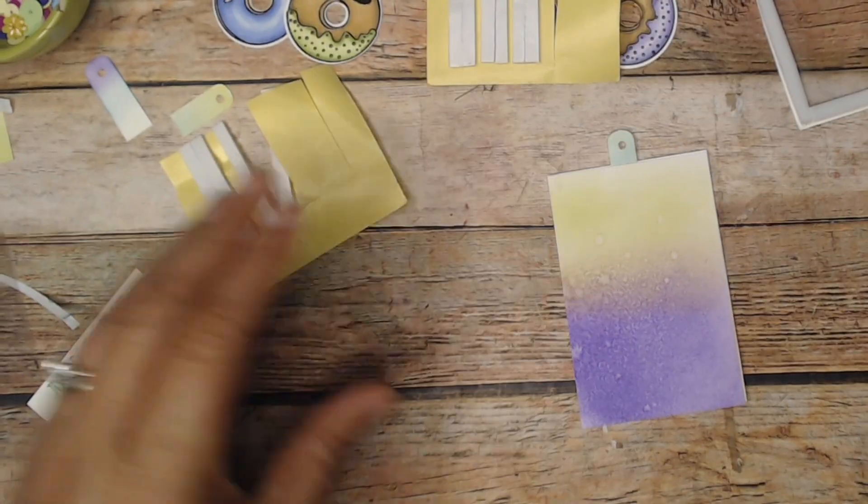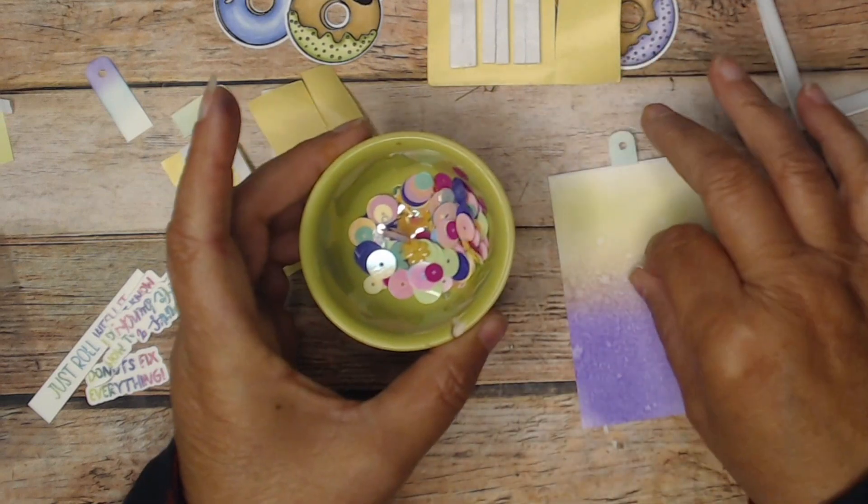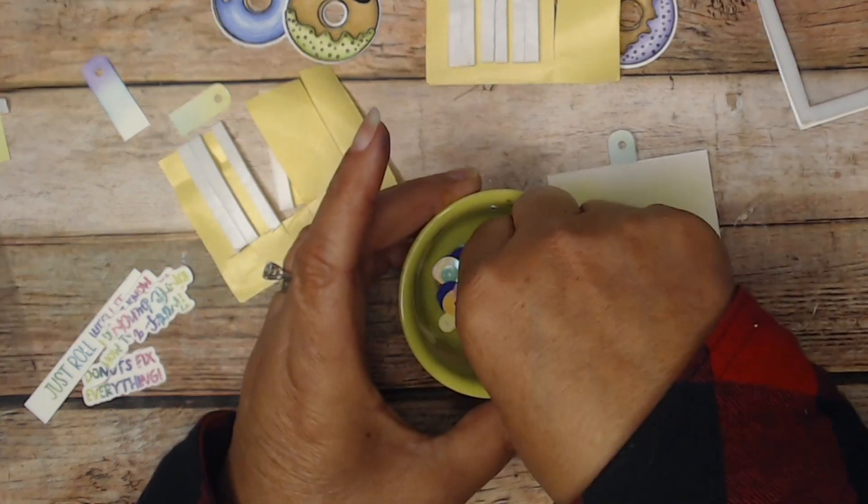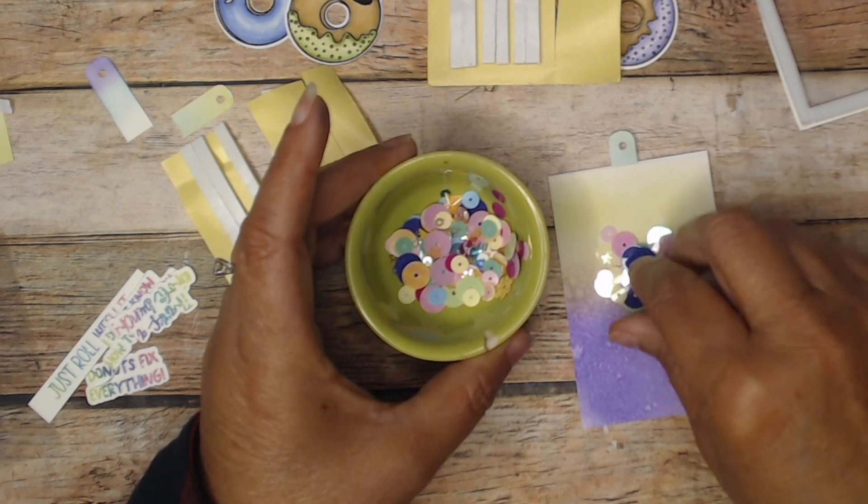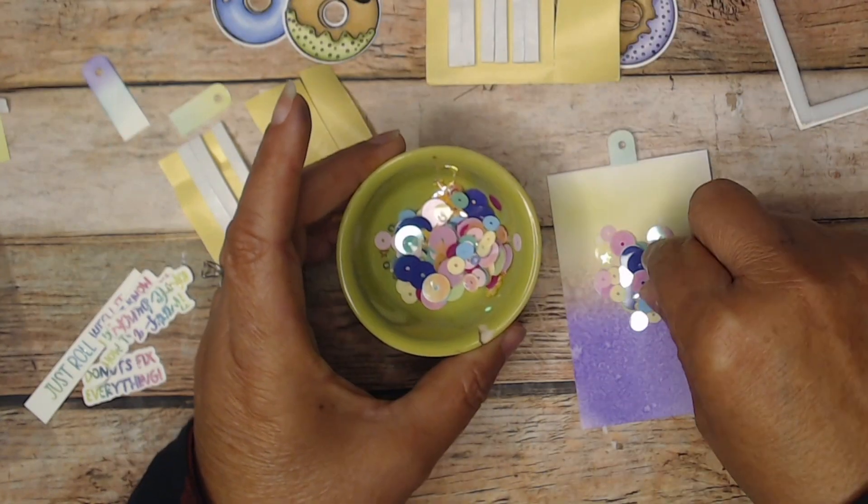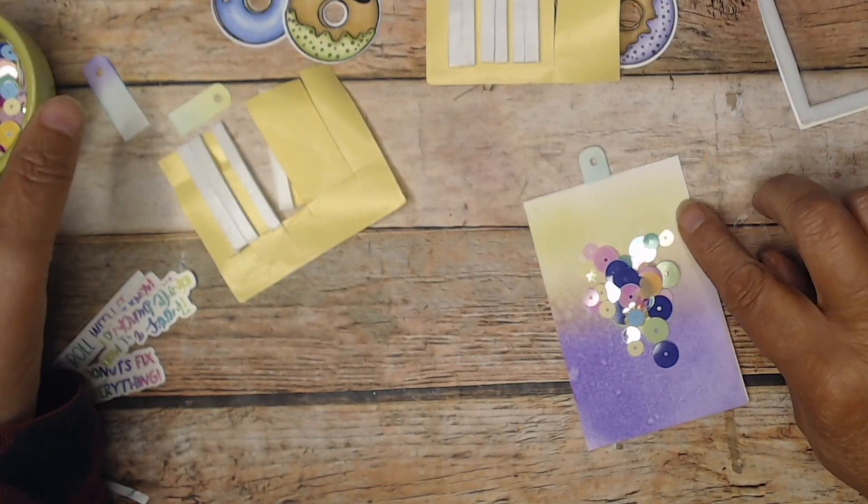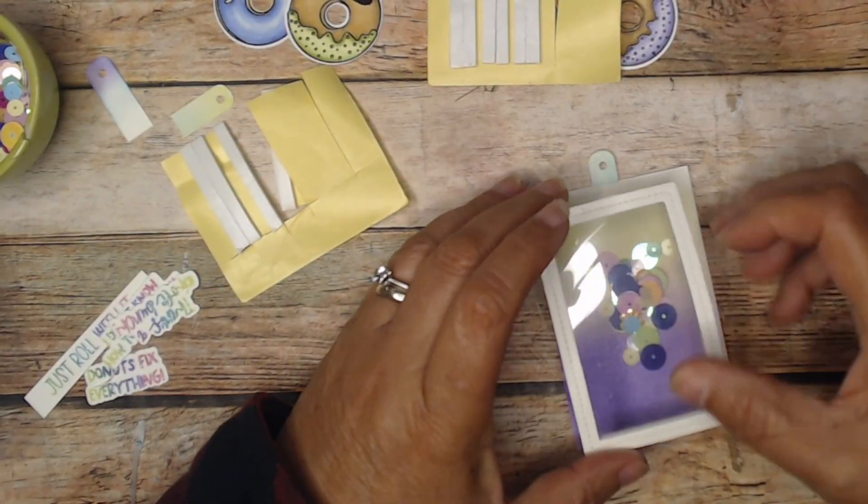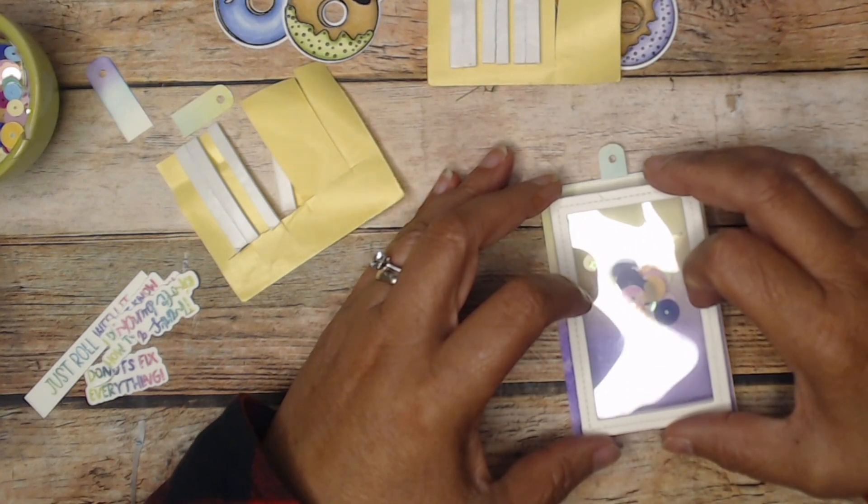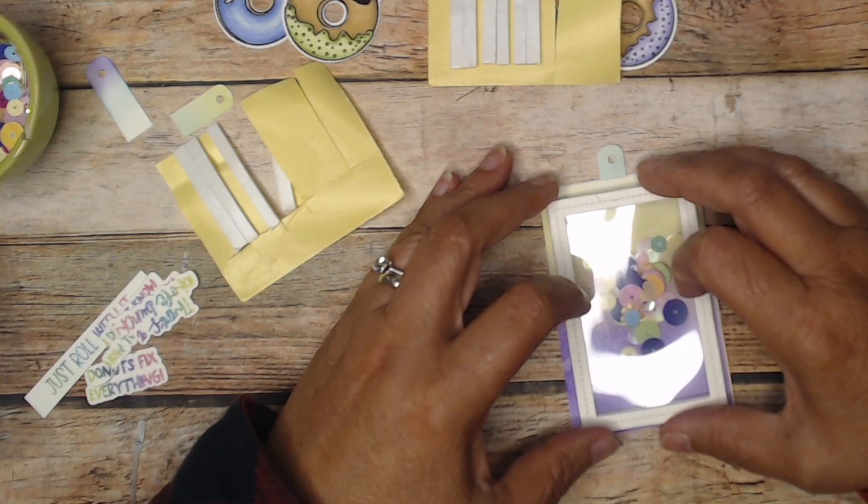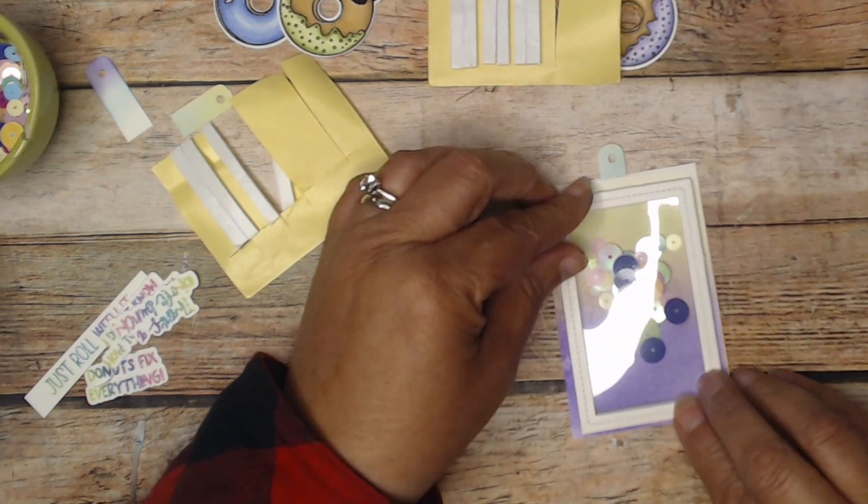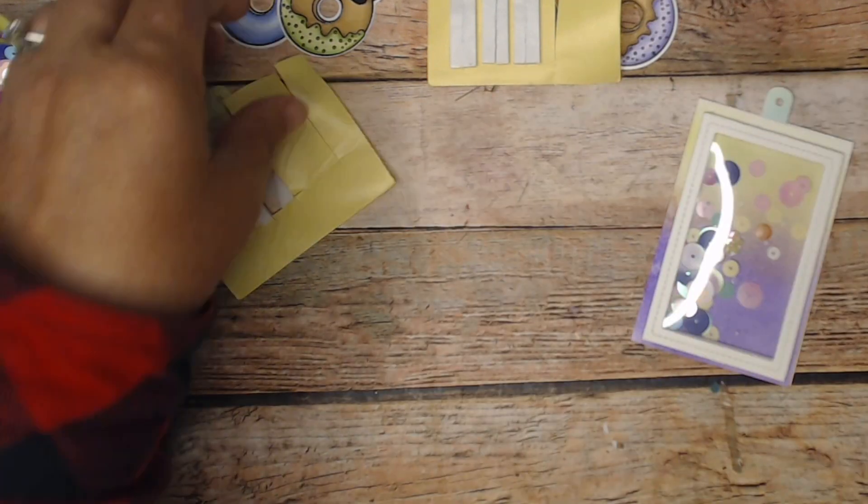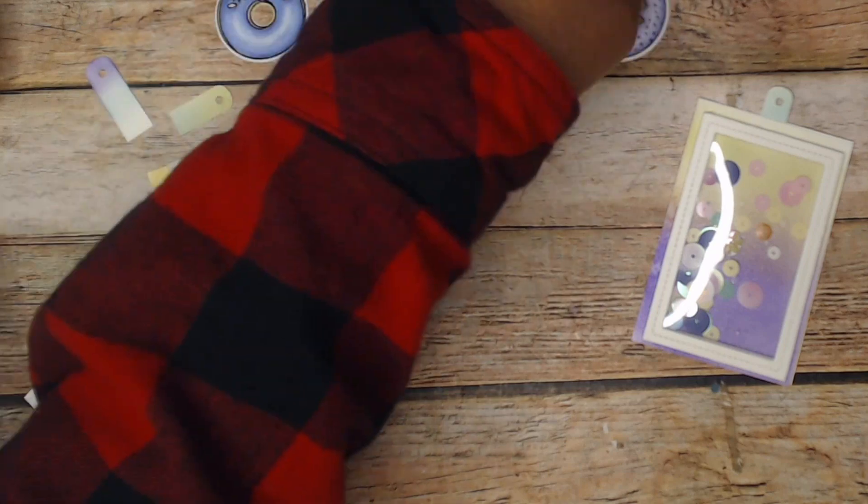All right, now I will take—so I have sequins. Now most all of these, all of these are very flat. They're actually donut shaped. I'm putting them in the center area. And then I will take my frame and layer my frame, and make sure it is straight and center it.